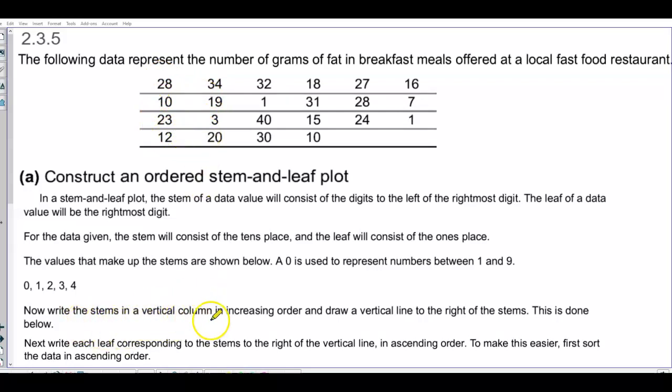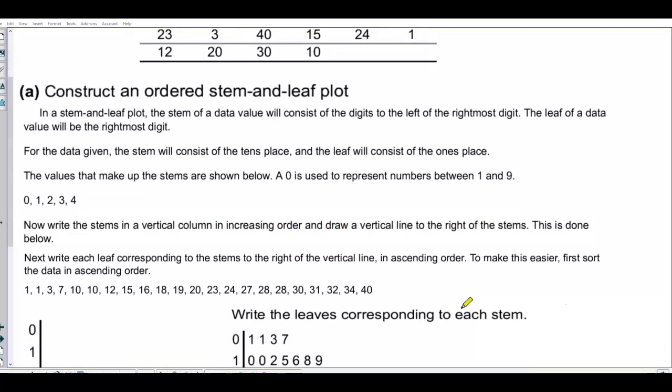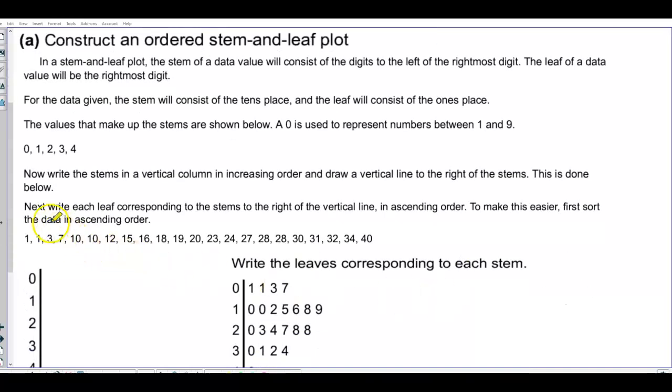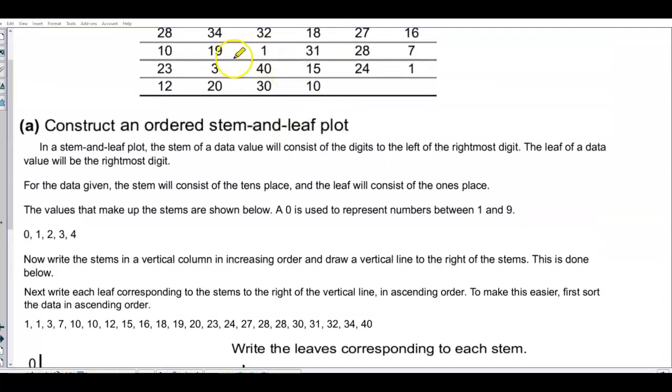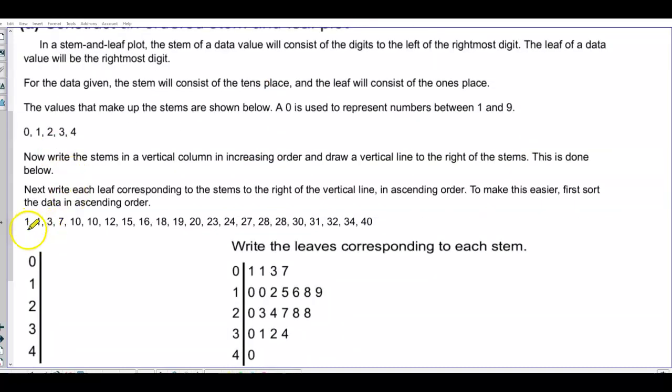Now we're going to write the stems in a vertical column in increasing order, and then draw a vertical line to the right of the stems. And this is what you can see down below. So here we have our 0, 1, 2, 3, and 4, and then our line. Now here are all the numbers that are listed in that particular data set. So let's take a look at the numbers going from least to greatest. Here we have 1 to 40.